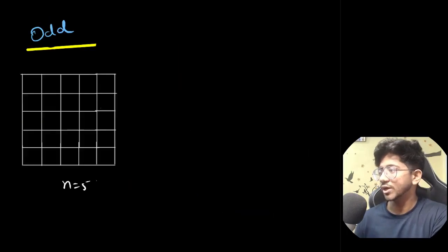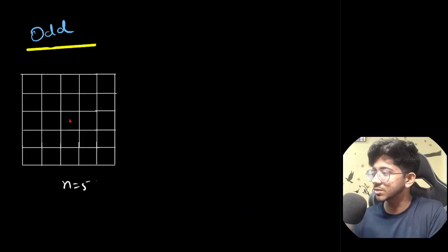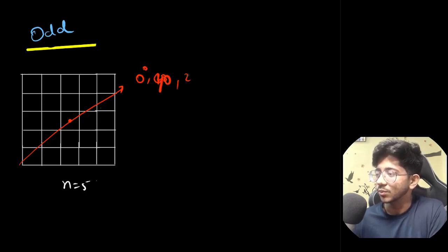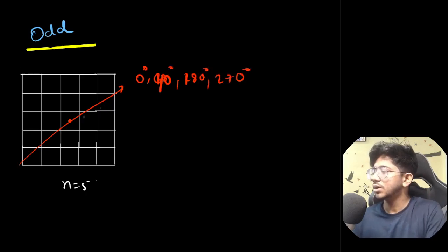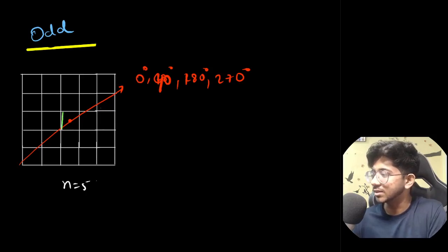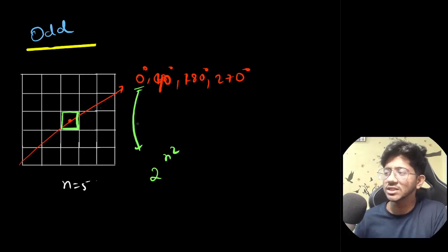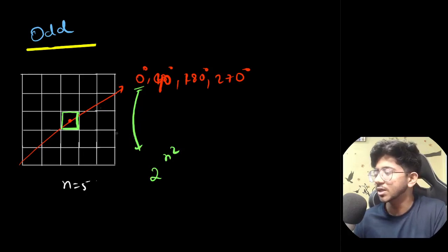Now for the odd case — say n=5. The rotational axis again passes through the center, and we again have four rotations: 0°, 90°, 180°, 270°. For the 0° rotation, all n² cells are independent, giving 2^(n²) colorings, same as before. Crucially, for every rotation the center cell always stays in place.